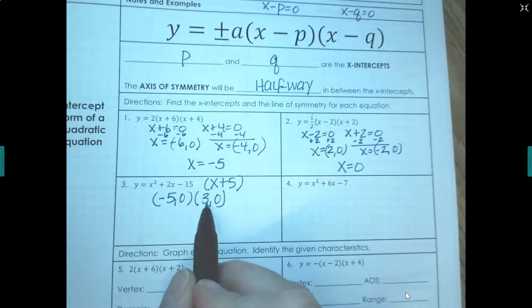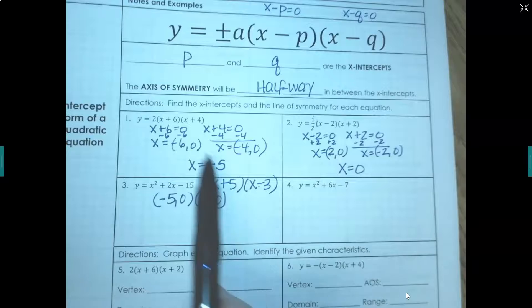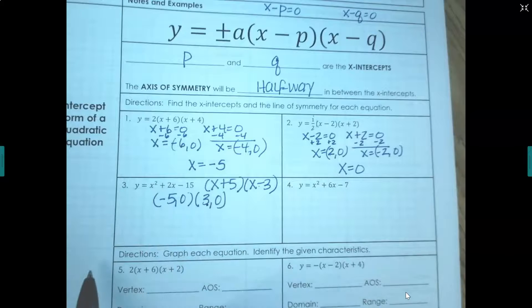in its factored form it would be plus 5. This 3 is a positive 3, so in its factored form it would be negative 3. This would be the factored form of this equation.